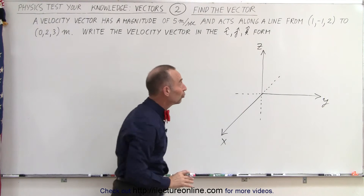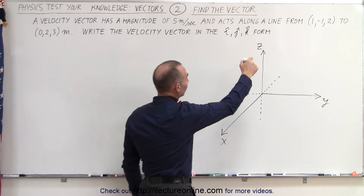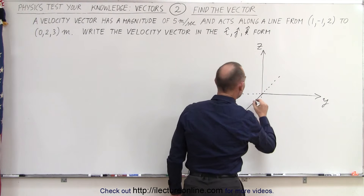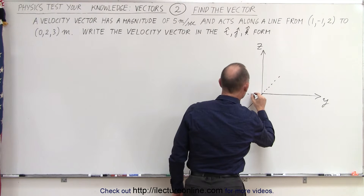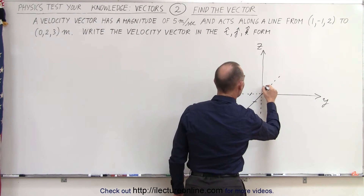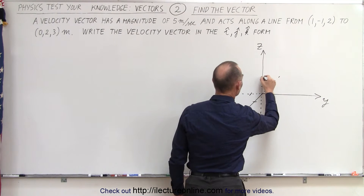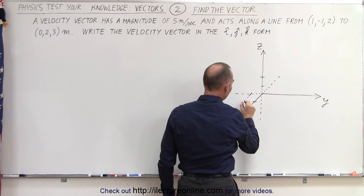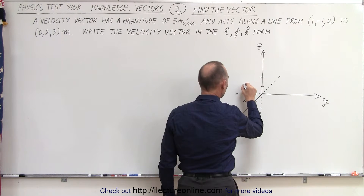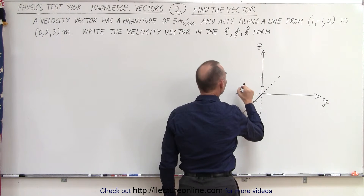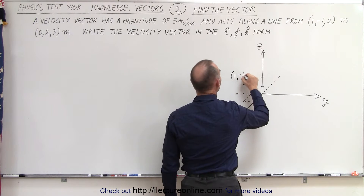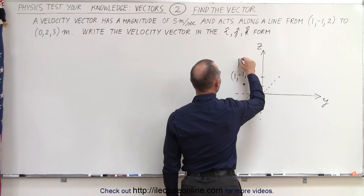Now let's find those two points. The first point is positive one in the x direction, negative one in the y direction, and positive two in the z direction. So if we draw a little parallelogram here, from this point we go up one, two. There's our first point and it would be one, negative one, and two. So that's point one.